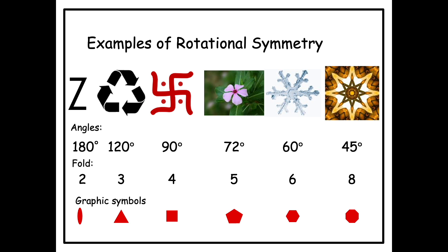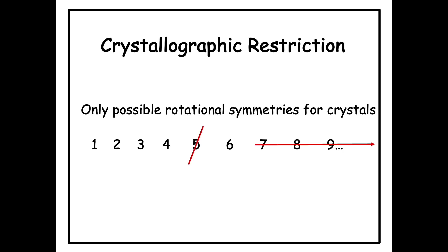Now, a beautiful and very interesting theorem — the proof of which we will look at in a different video — states that the only possible rotation axes of symmetry for crystals are one-fold, two-fold, three-fold, four-fold, and six-fold. Five is missing, and there is a full stop after six — no higher symmetry axes like seven, eight, nine, or beyond are possible in a crystal. This is called the crystallographic restriction theorem: rotational symmetry for crystals is restricted only to one, two, three, four, and six-fold rotation axes.